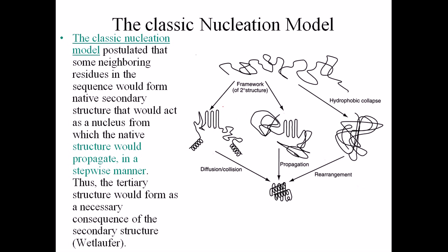The classic nucleation model states the propagation of secondary structure. Rather than forming all the secondary structure possible in the primary sequence, only some stretch of secondary structure forms in some region of the primary sequence. This secondary structure serves as a nucleus for the overall protein, and all the other amino acid sequences start to accommodate onto this nucleus to finally make the actual three-dimensional structure of the protein.